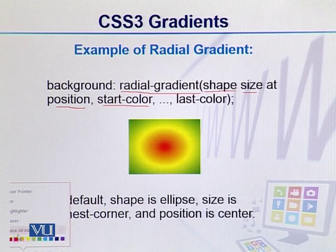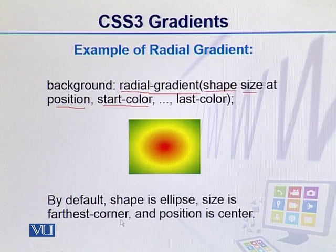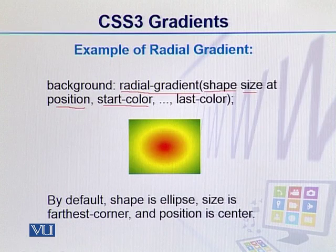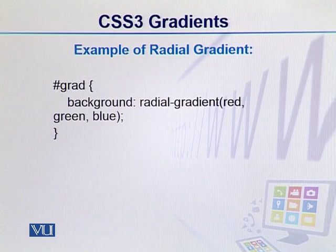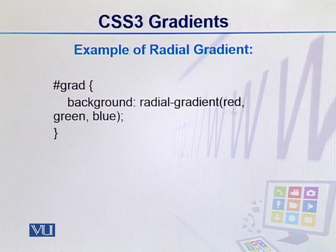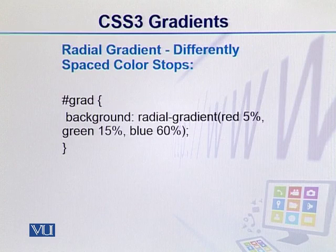Remember that for radial gradient, the default shape is ellipse, the size is farthest-corner, and the position is center. In this example, we have created a radial gradient using three colors: red, green, and blue.